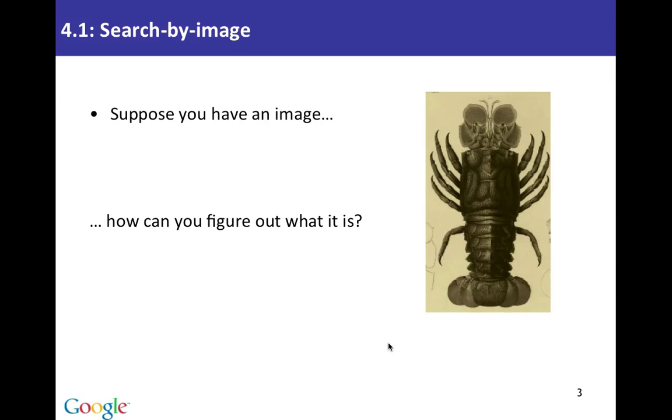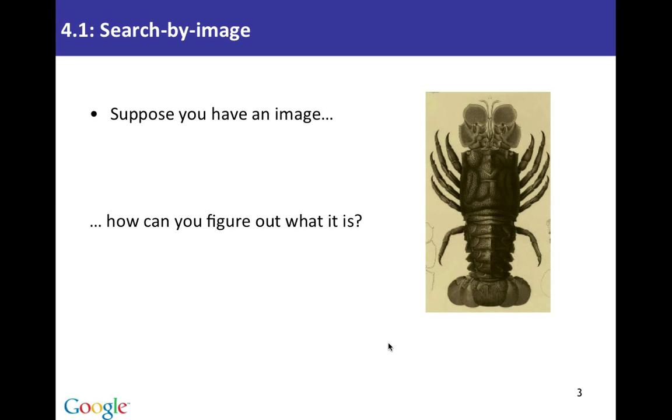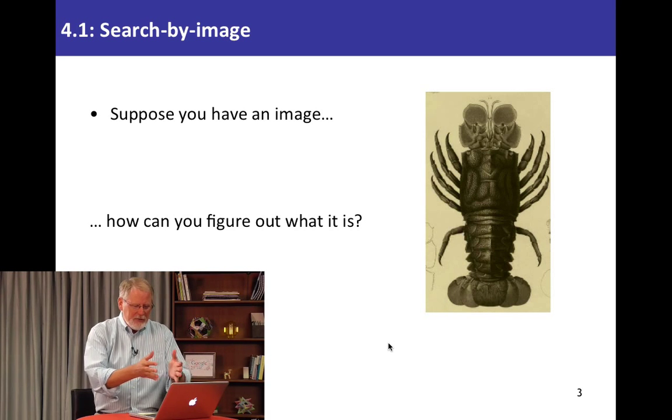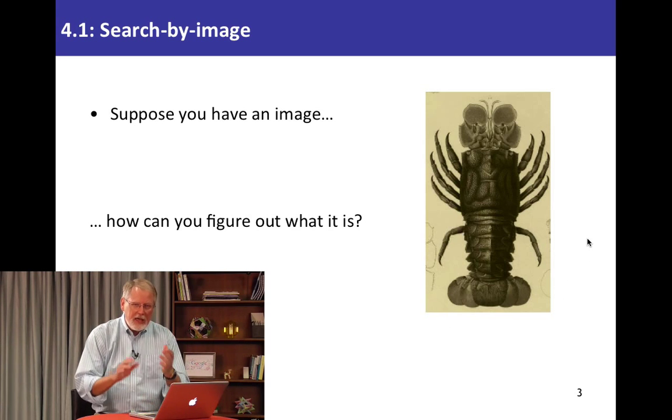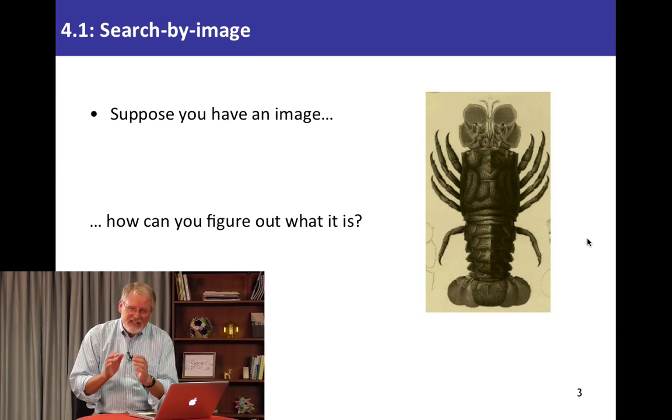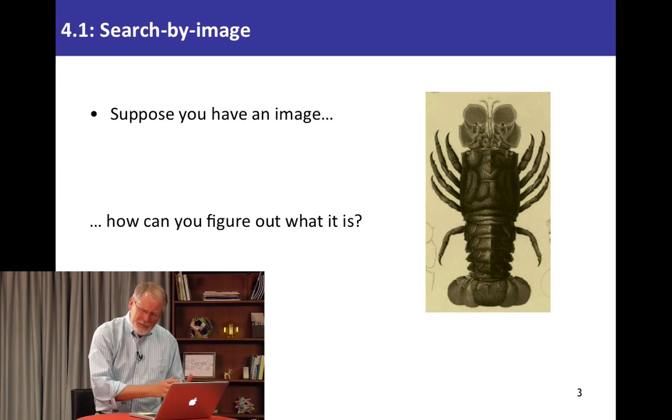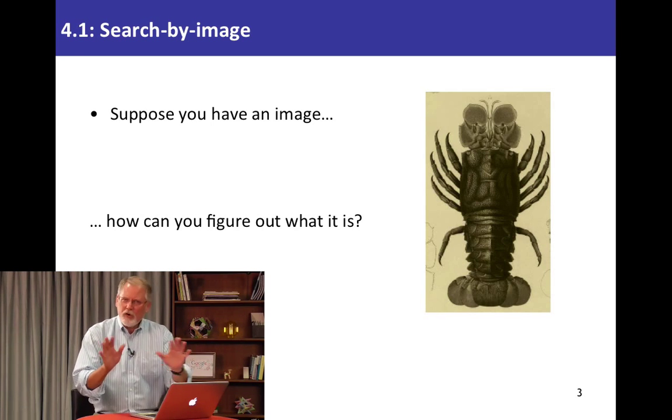Let's first start with Search by Image. Search by Image is a very basic idea. We already know about image search where you can type in a few terms, and then Google will find images that match or have those terms in the description or nearby text. Now we're going to reverse it a little bit. We're going to take an image, like this lobster here, and say, can we use this image to search for that image on the internet? No words involved. Let me show you how this works.